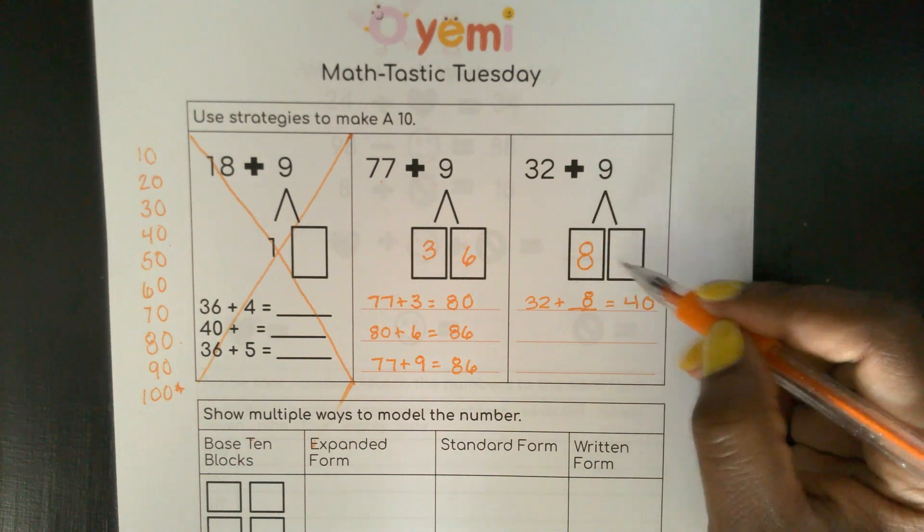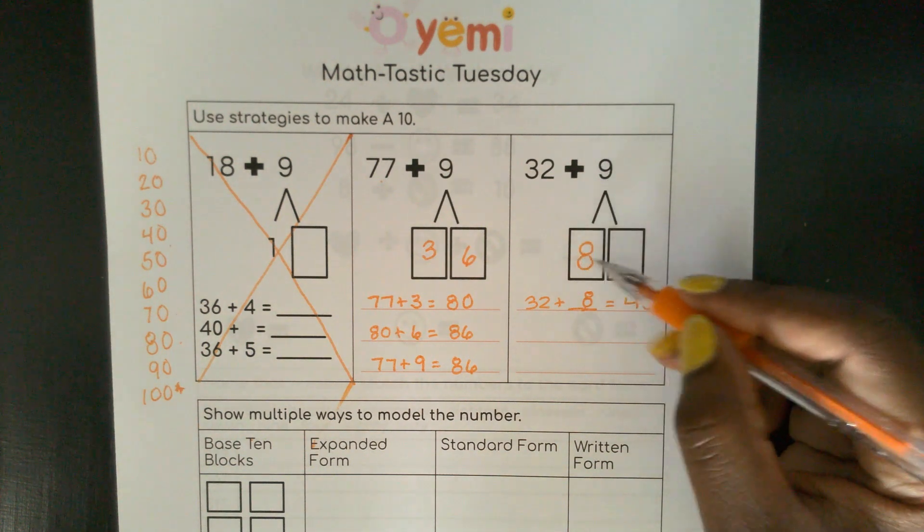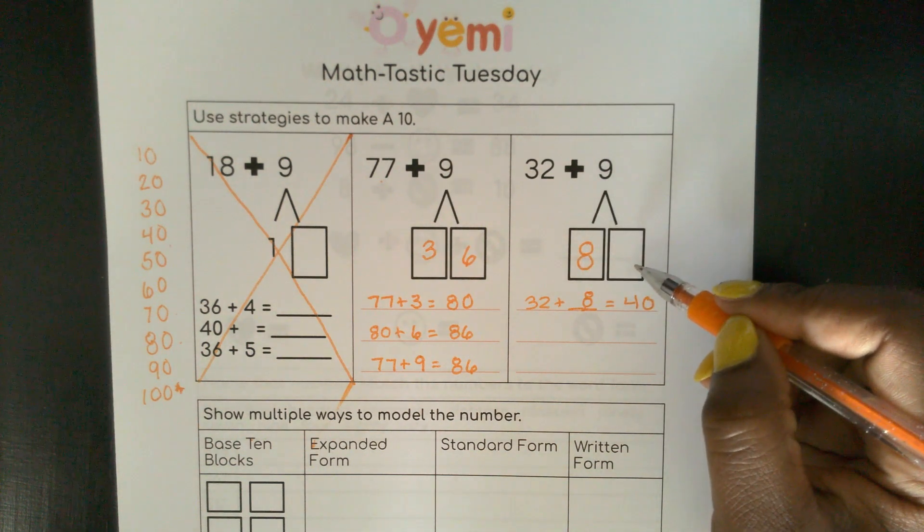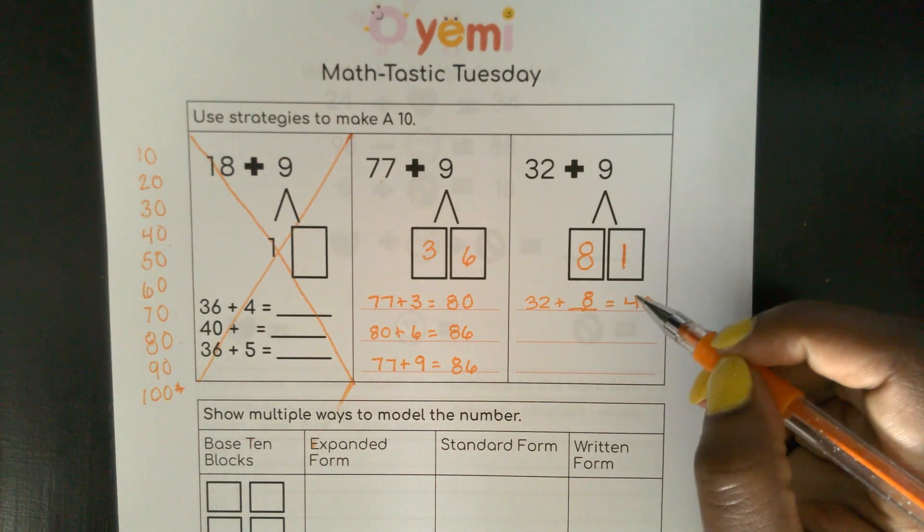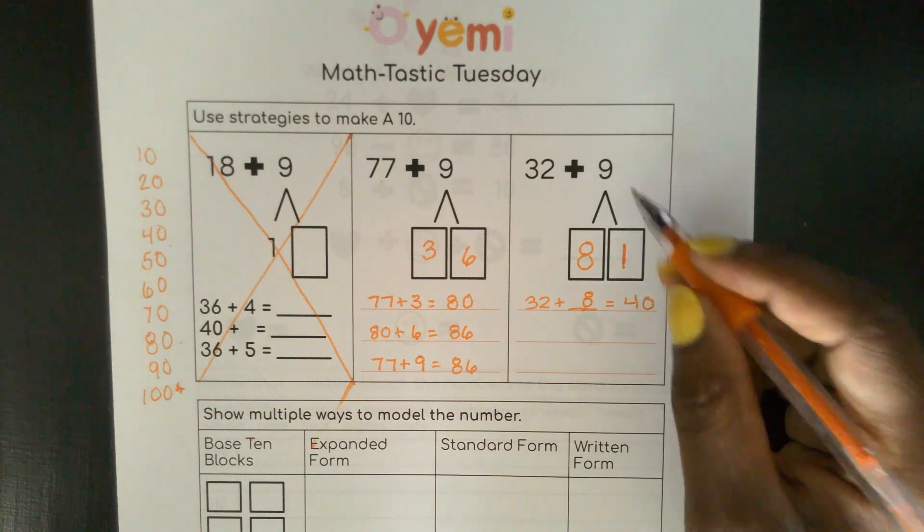That's the part we needed to make the next 10. Now, 8 plus what will give me 9? You've got it. You need 1 more. 8 plus 1 equals 9.